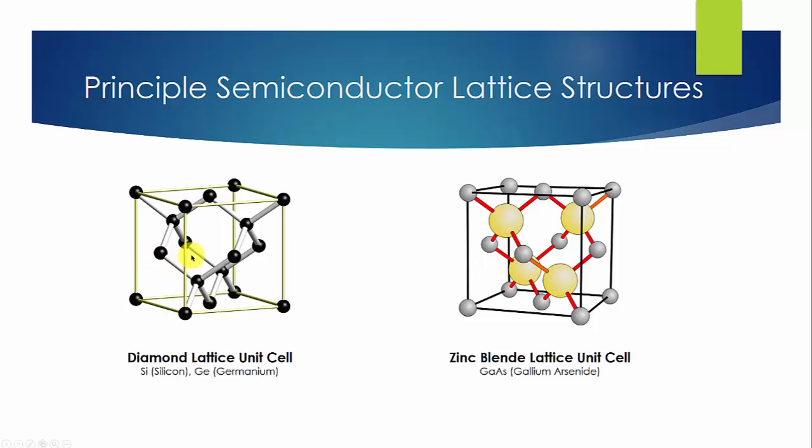The right side structure is called a zinc blende lattice unit cell. The two-six compound germanium arsenide has such a structure. It is essentially identical to the diamond lattice, except that lattice sites are apportioned equally between two different atoms.